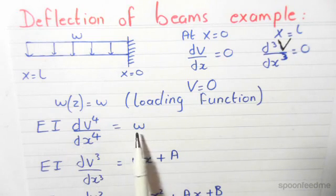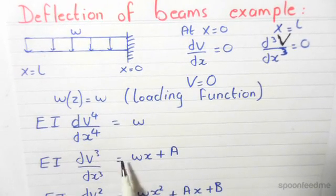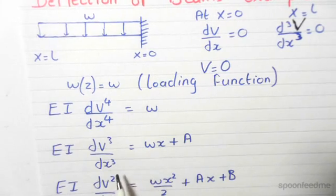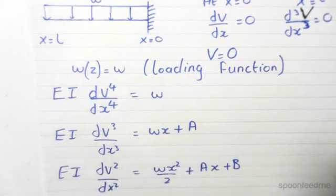Since we have to integrate it four times, this is to the power of four. Okay, so integrating once, we get EI d³v/dx³ equals Wx plus A. Remember, it's with respect to x this time.